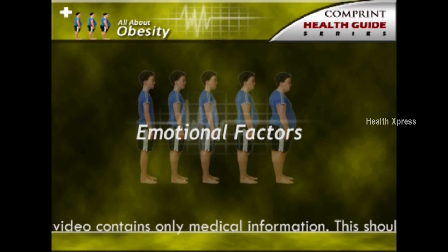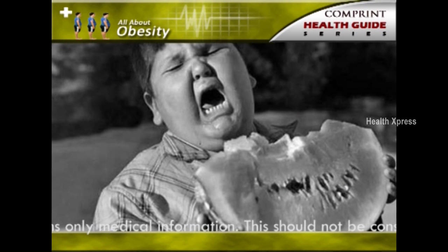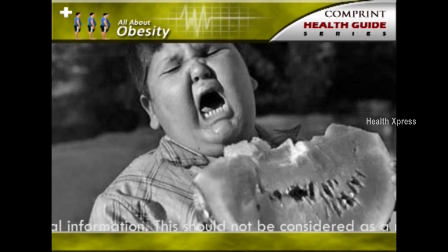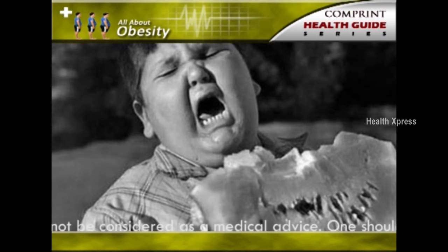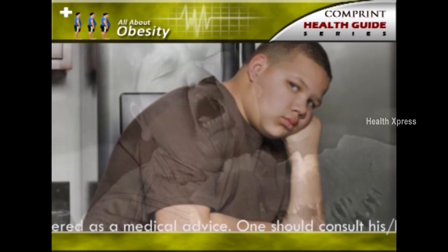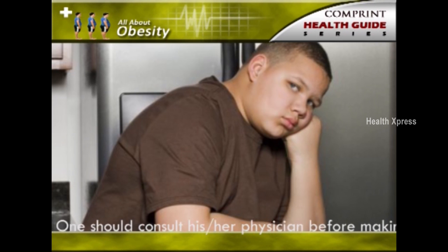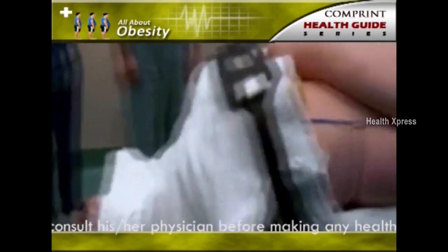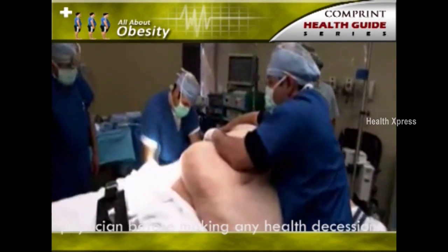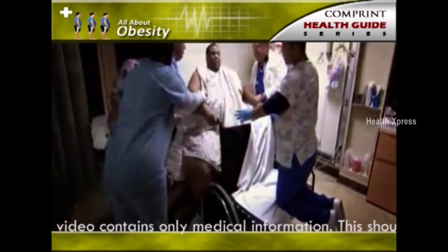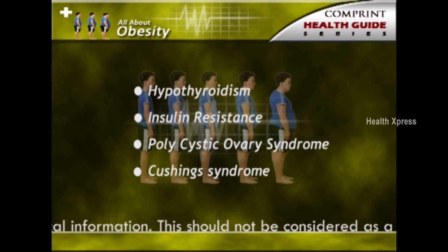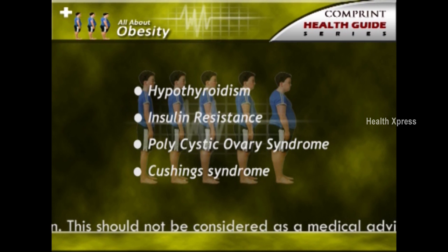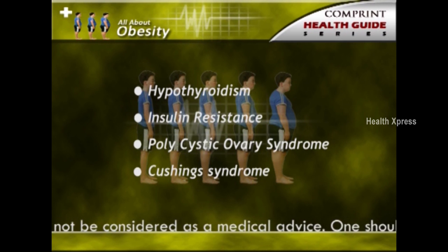Psychological Factors. For some people, emotions influence eating habits. Many people eat excessively in response to emotions such as boredom, sadness, stress, or anger. While most overweight people have no more psychological disturbances than normal weight people, about 30% of the people who seek treatment for serious weight problems have difficulties with binge eating. Diseases such as hypothyroidism, insulin resistance, polycystic ovary syndrome, and Cushing's syndrome are also contributors to obesity.